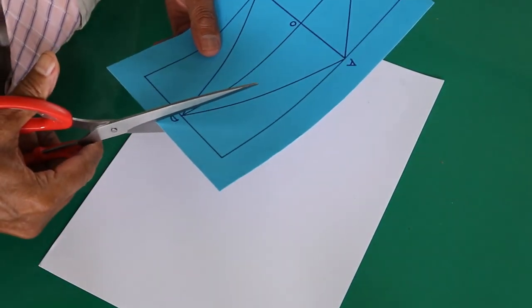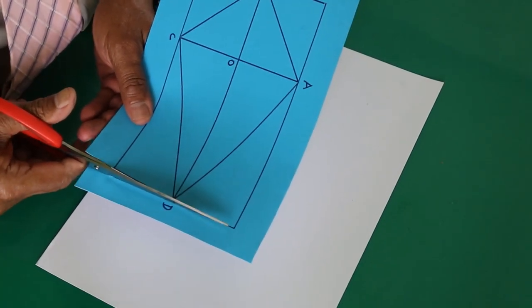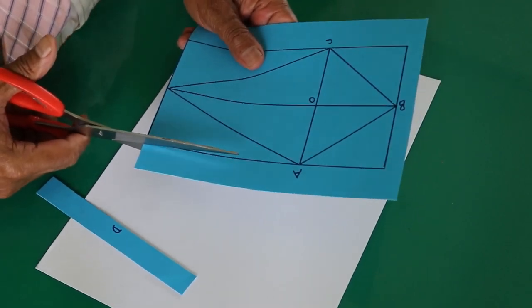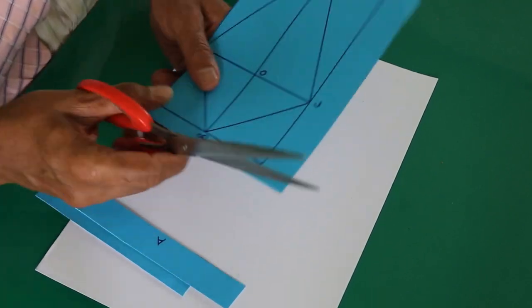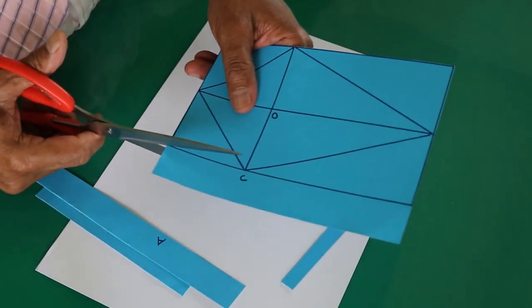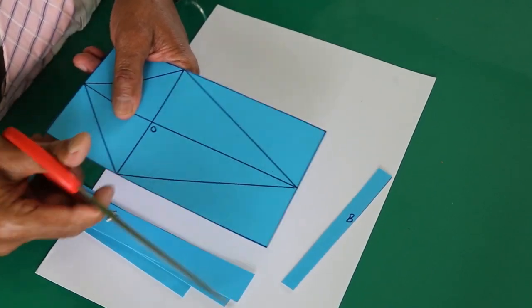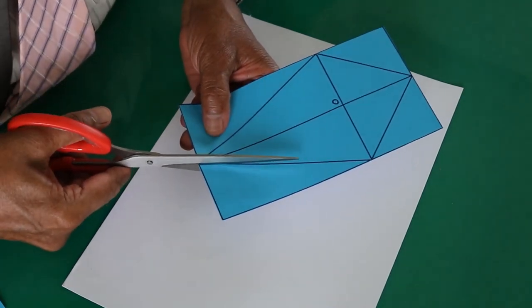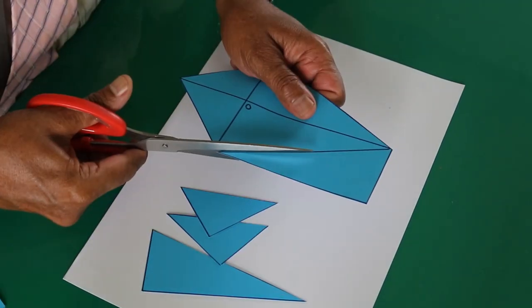First of all, cut out the rectangle, the boundary of the rectangle, and cut out these triangles also.